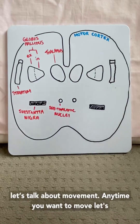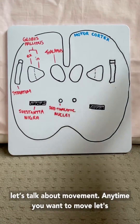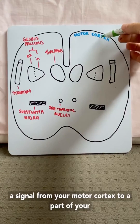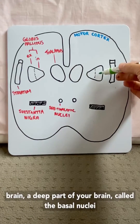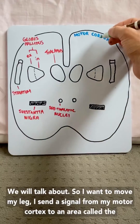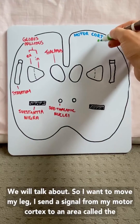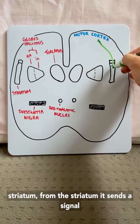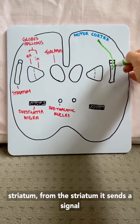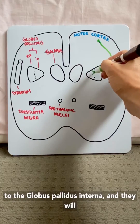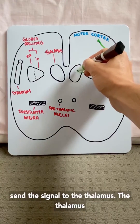So first let's talk about movement. Anytime you want to move — let's say your leg for example — you need to send a signal from your motor cortex to a deep part of your brain called the basal ganglia, with all these different components. I send a signal from my motor cortex down to an area called the striatum. From the striatum it sends a signal to the globus pallidus interna, and that sends the signal to the thalamus.